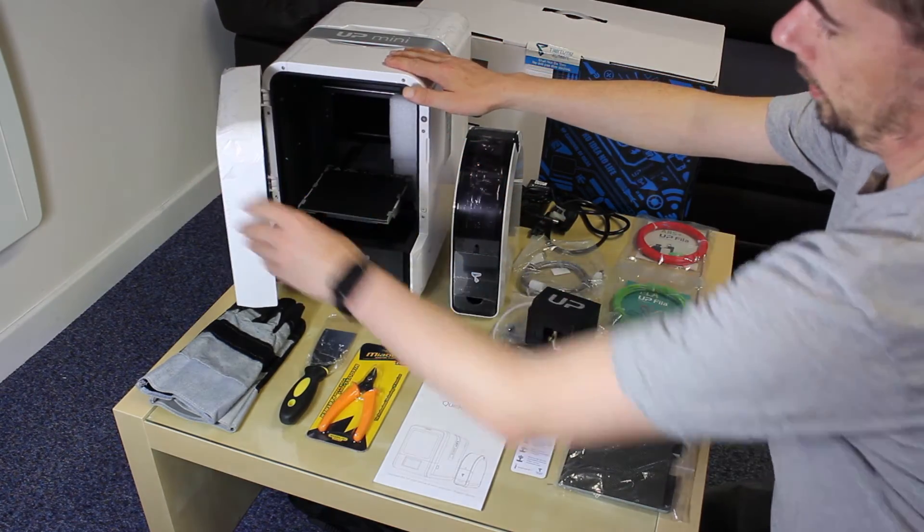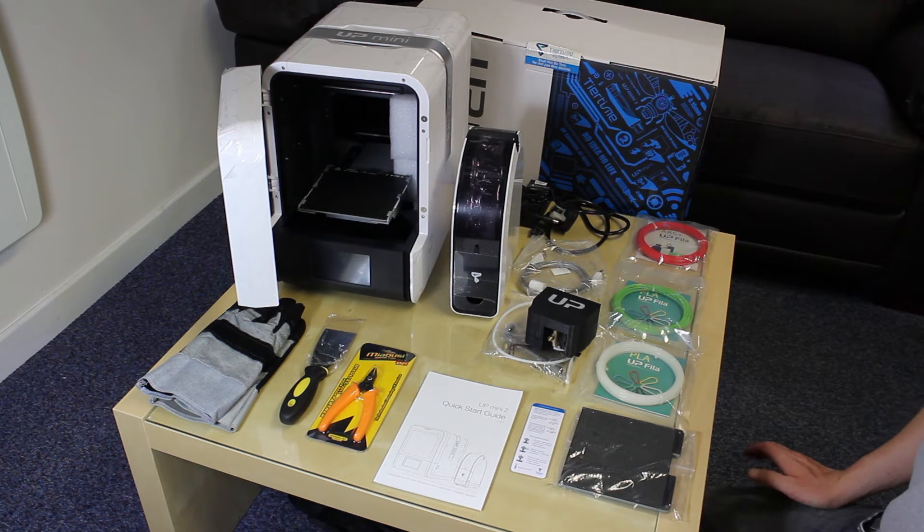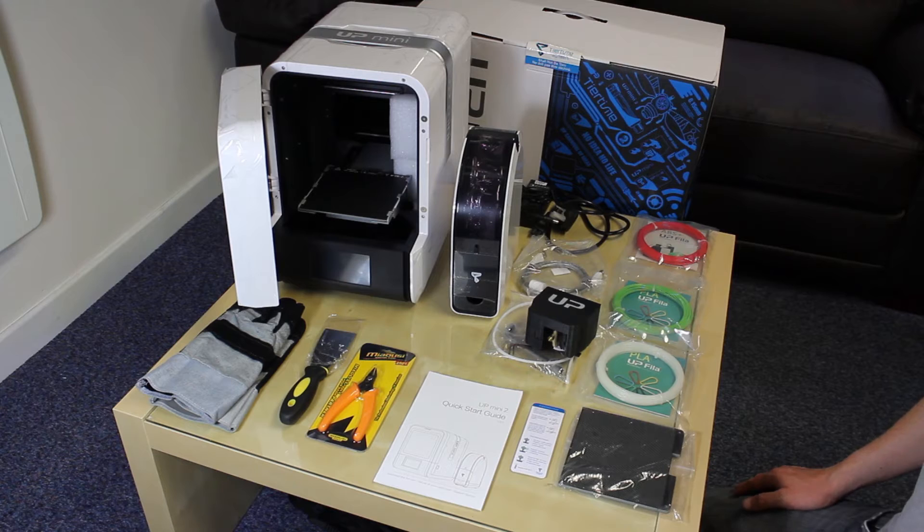If you open up the front door you can see the build platform here. And underneath there's a HEPA filter so if you don't like the smell of ABS then this is the printer for you.